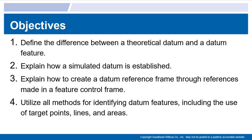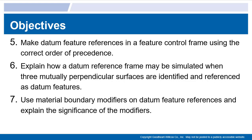Let's start with the objectives. Number one is define the difference between a theoretical datum and a datum feature. Number two, explain how simulated datums are established. Number three, explain how to create a datum reference frame through references made in a feature control frame. Number four, utilize all methods for identifying datum features, including the use of target points, lines, and areas.